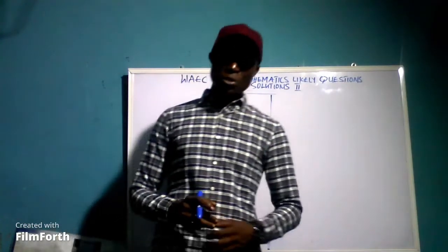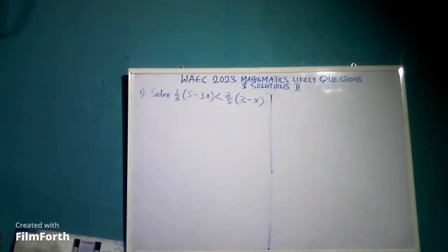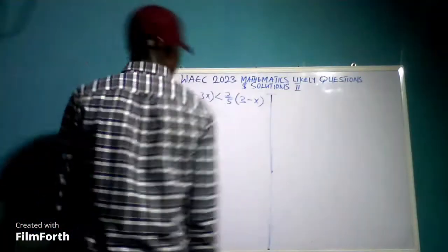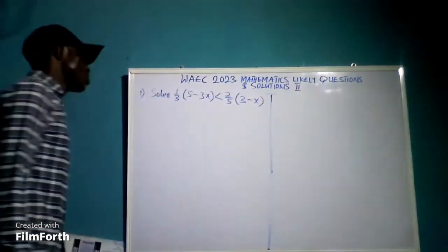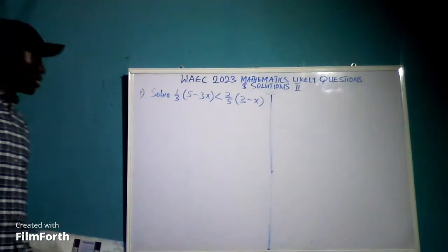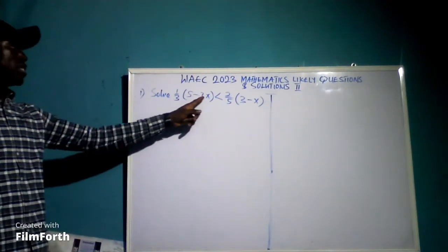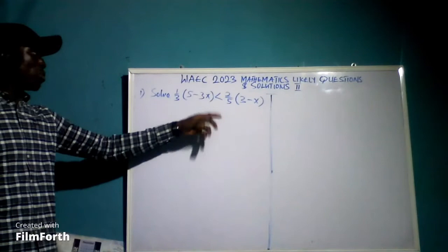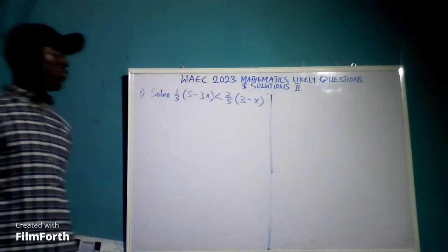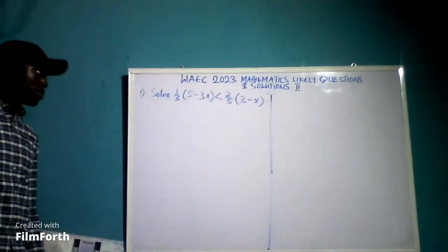Now let's have the first question. Looking at the first question, we are asked to solve an inequality. We are asked to solve for one-third open bracket 5 minus 3x, close bracket, less than two-fifths open bracket 3 minus x, close bracket.